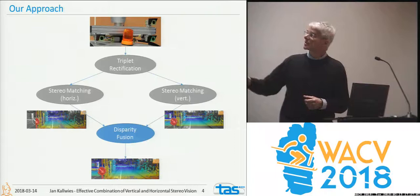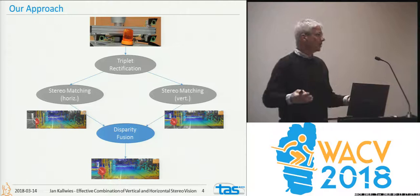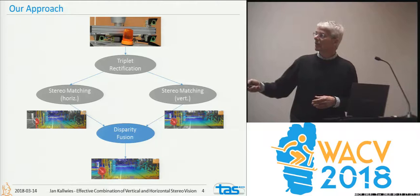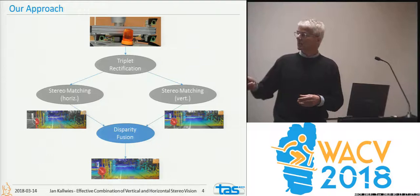The key is to rectify the vertical camera pair and the horizontal camera pair based on this common camera. You can then run, in parallel, the horizontal stereo and the vertical stereo. There's no additional cost other than an extra processor — it doesn't cost you any time. The main contribution of this paper is how you then fuse those two disparities together, which can cost a couple of milliseconds but can still be done online.